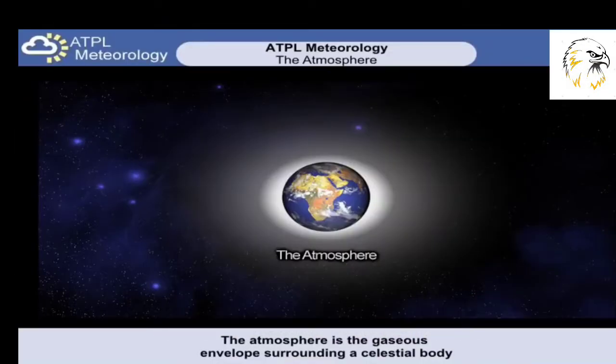The atmosphere is defined as being the gaseous envelope surrounding a celestial body. In more simple words, the atmosphere is the collection of gases that is held around the Earth by gravity.